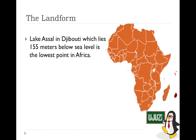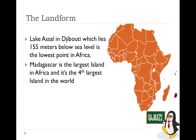Lake Assal in Djibouti, which lies 155 meters below sea level, is the lowest point in Africa and one of the lowest points in the world.